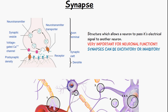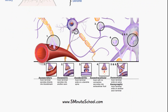Synapses are also classified based on what they connect to. Axosecretory synapses are where the axon terminal secretes directly into the bloodstream. Axo-axonic synapses are where the axon terminal secretes into another axon. Axodendritic synapses are where the axon terminal ends on a dendrite spine of another neuron. Axo-extracellular synapses are where the axon has no connection with another neuron but secretes neurotransmitters into the extracellular fluid.